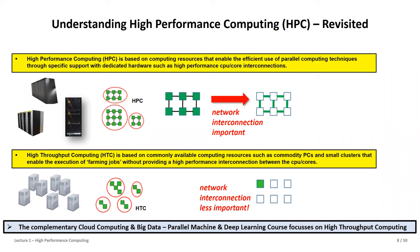In HTC, the interconnect is not so important — you want summary statistics at the end but don't need to interconnect every little second. This is a complete difference from weather forecasting, where every second you need information from neighboring CPUs or cores. These two different principles — HPC and HTC — are very important to know. In our complementary cloud computing course we focus much more on the HTC paradigm, which is also more common in clouds, although some HPC machines are part of clouds today.